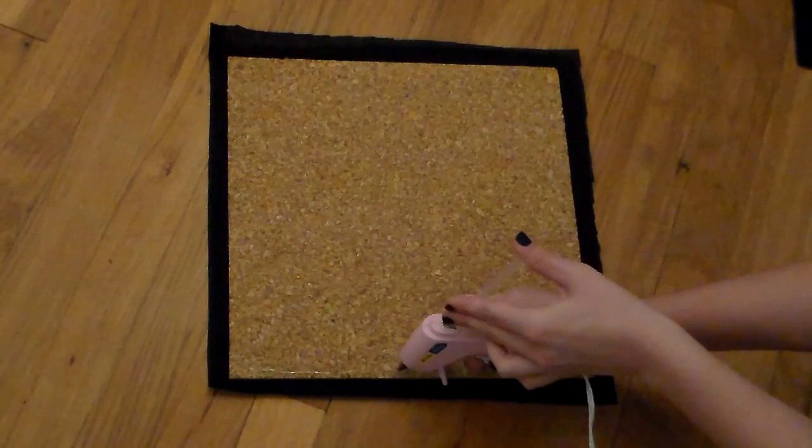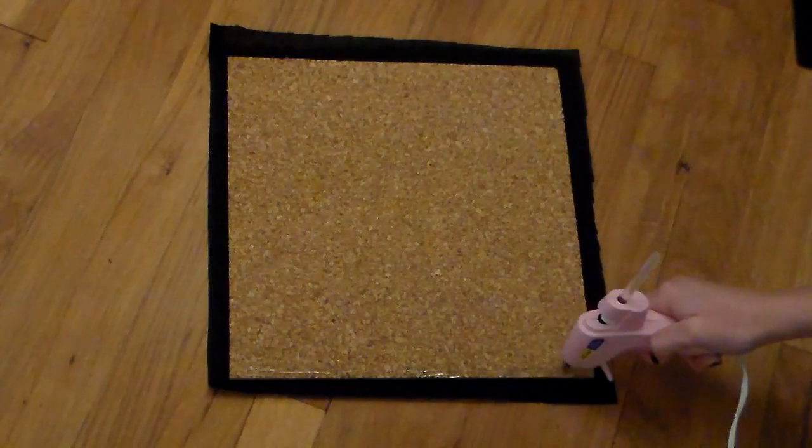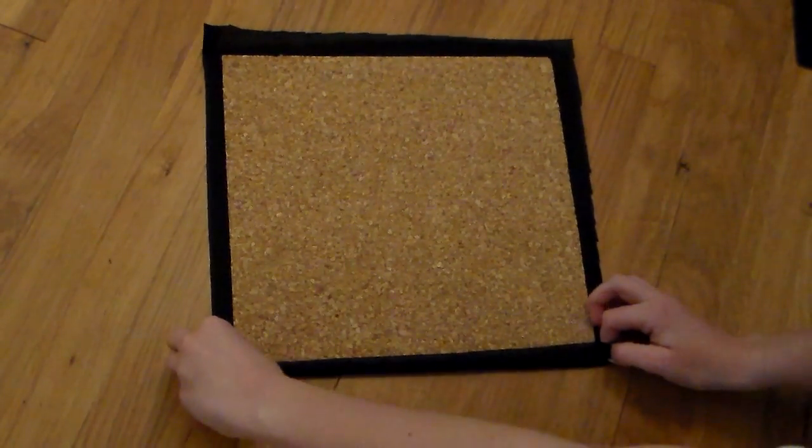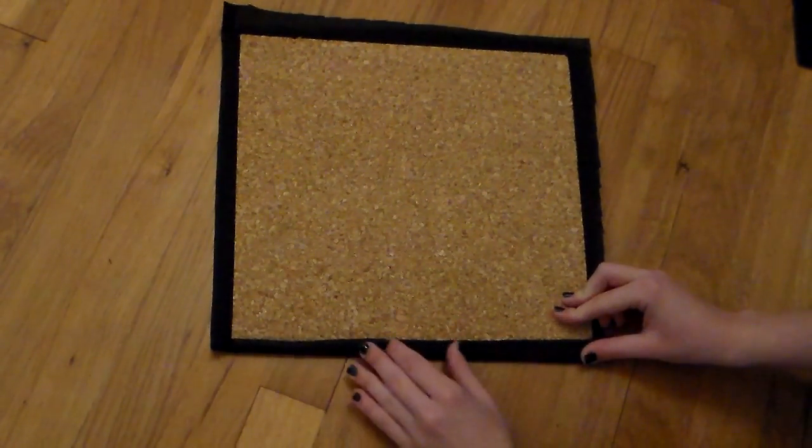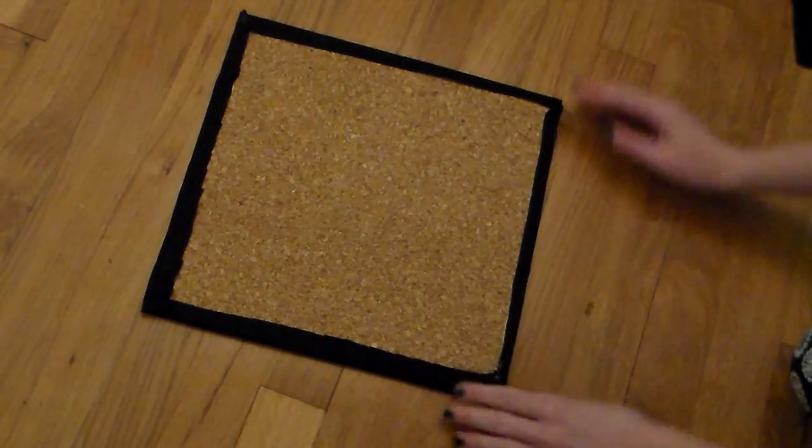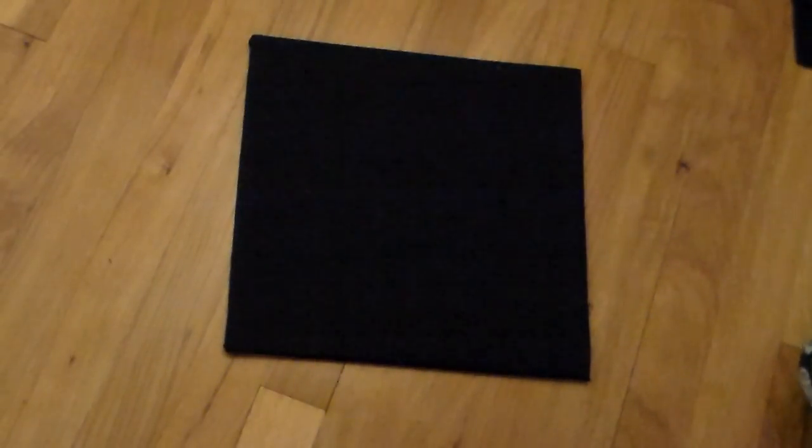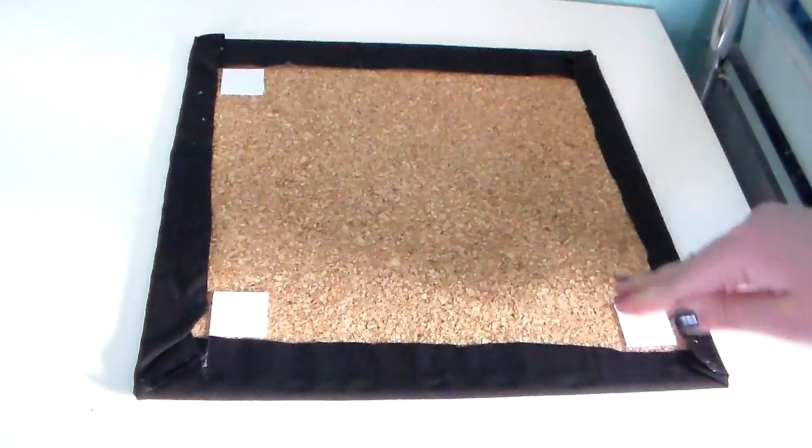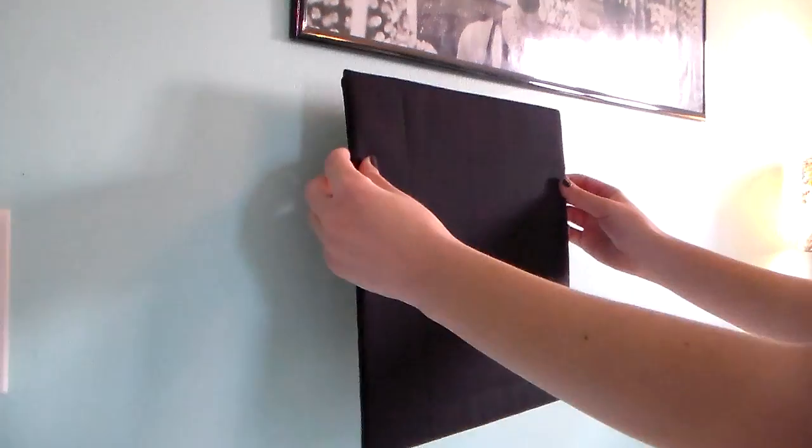Take a glue gun and glue the sides of the cork boards, then fold over the excess fabric and make sure it sticks onto the glue. Be careful not to burn yourself because trust me, I did that. Take the adhesive it comes with to stick it onto your wall.